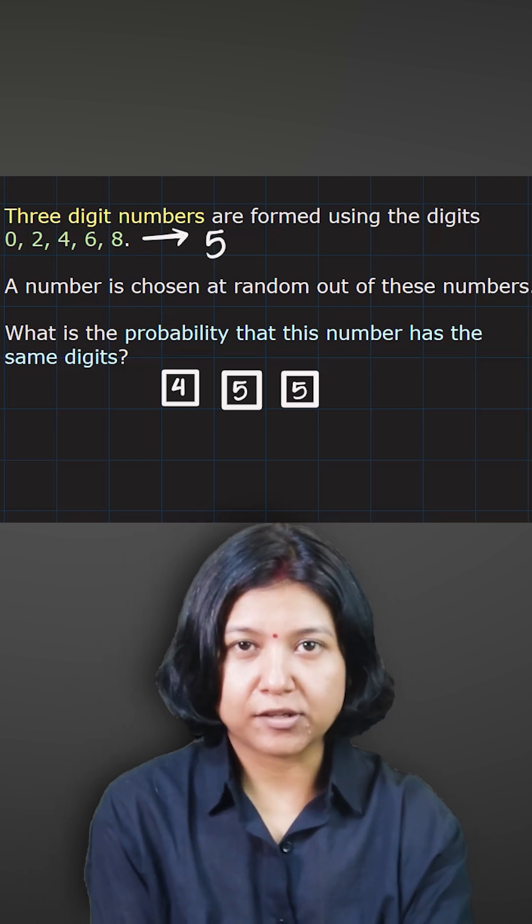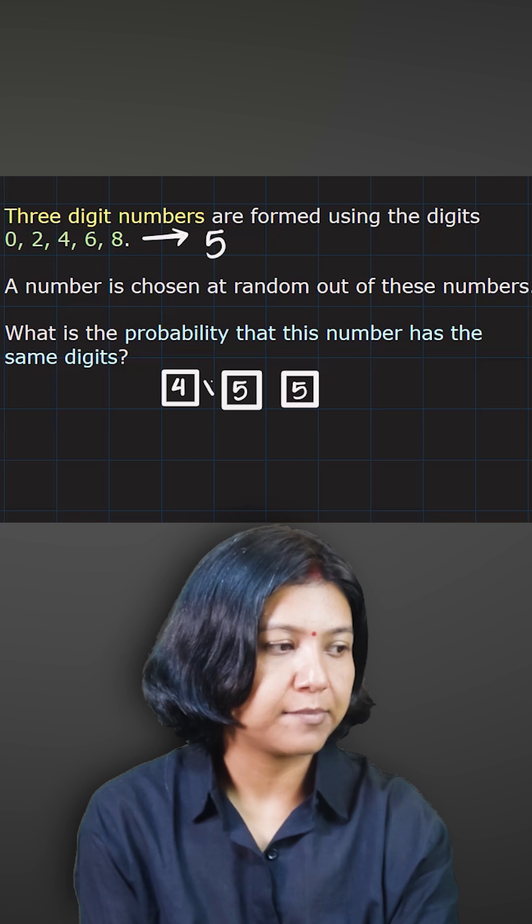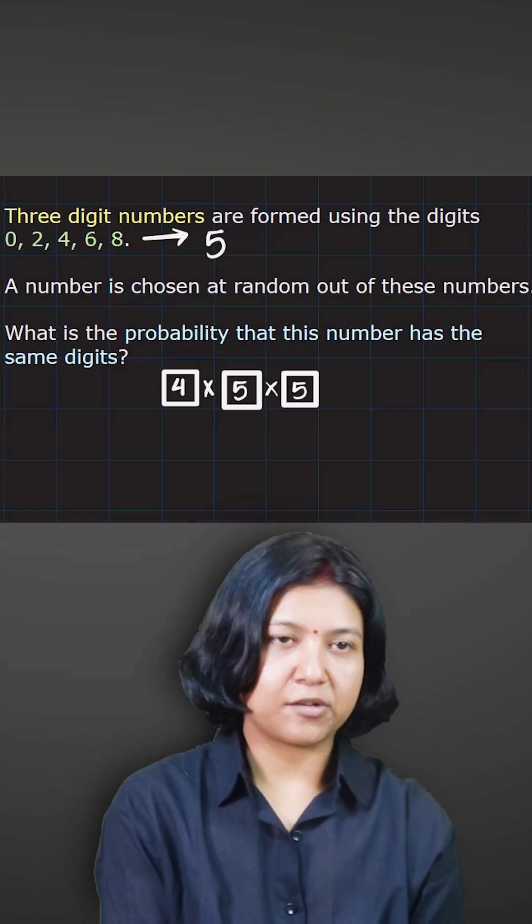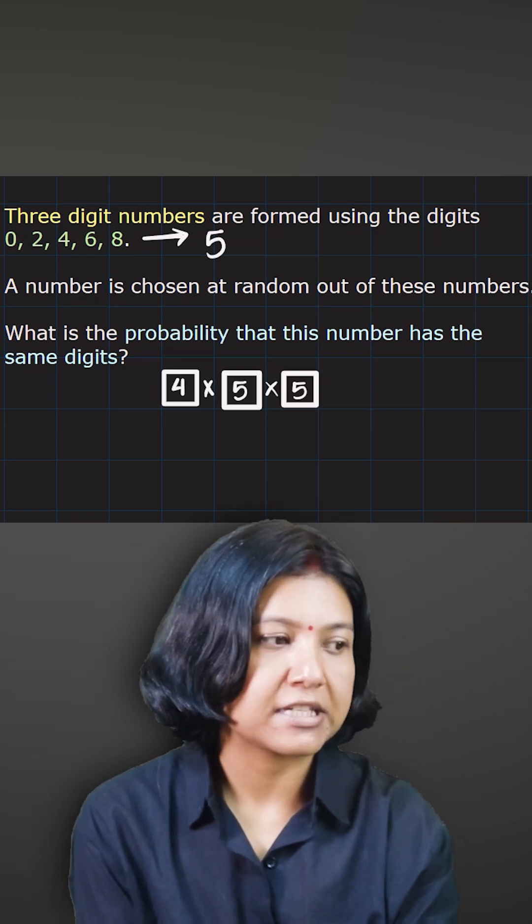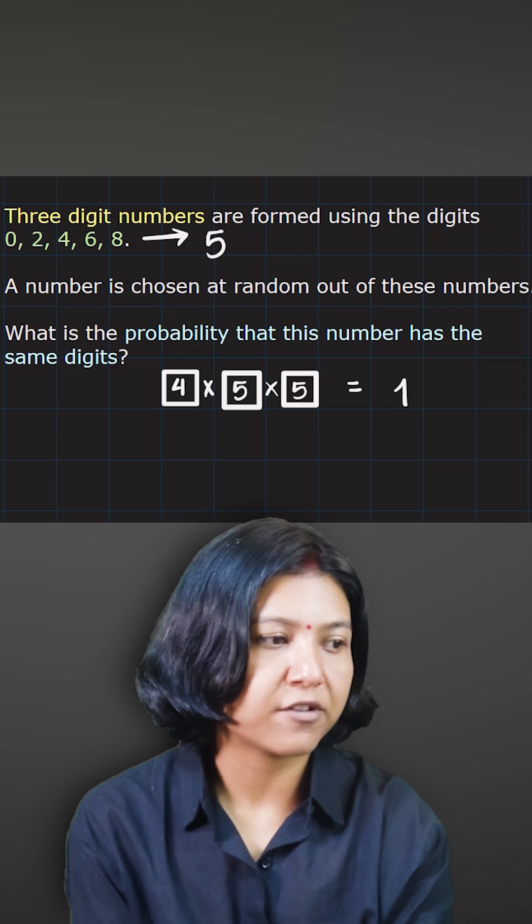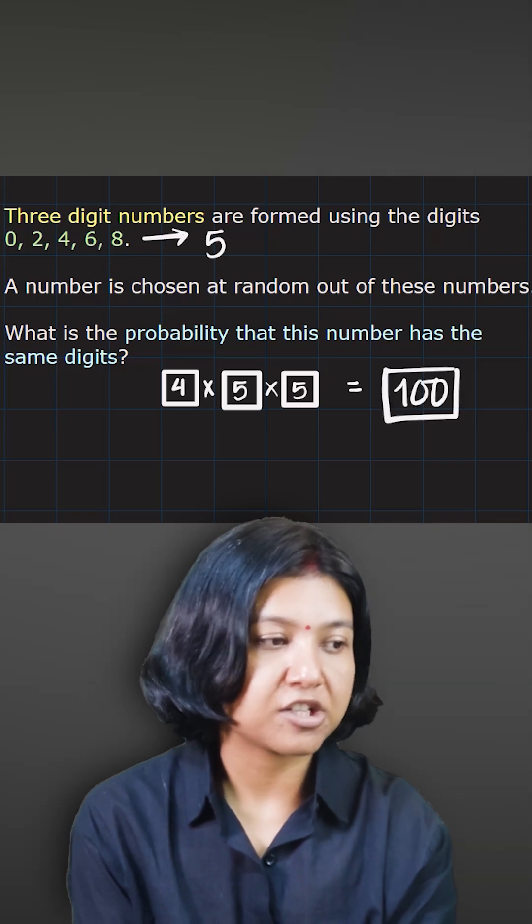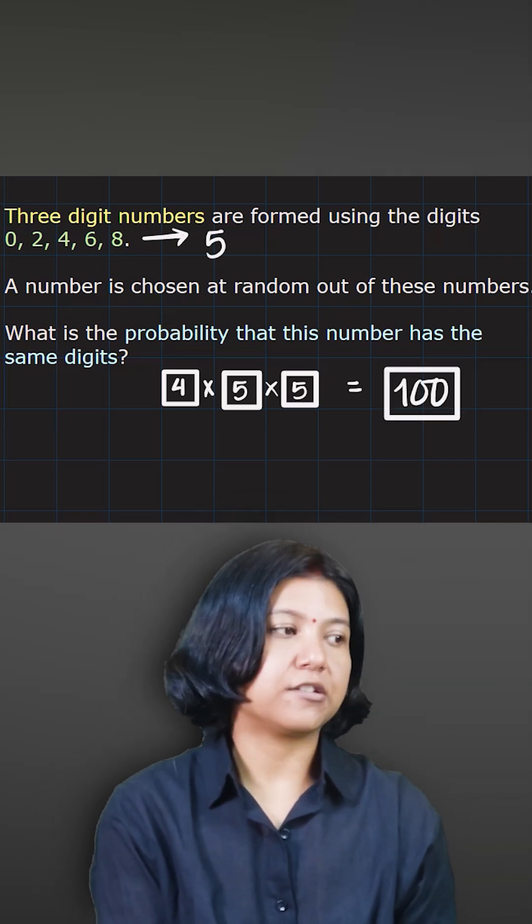The total number of three-digit numbers is found by multiplying these options: 4 times 5 times 5 equals 100. So we have a total of 100 three-digit numbers we can form using these five digits.